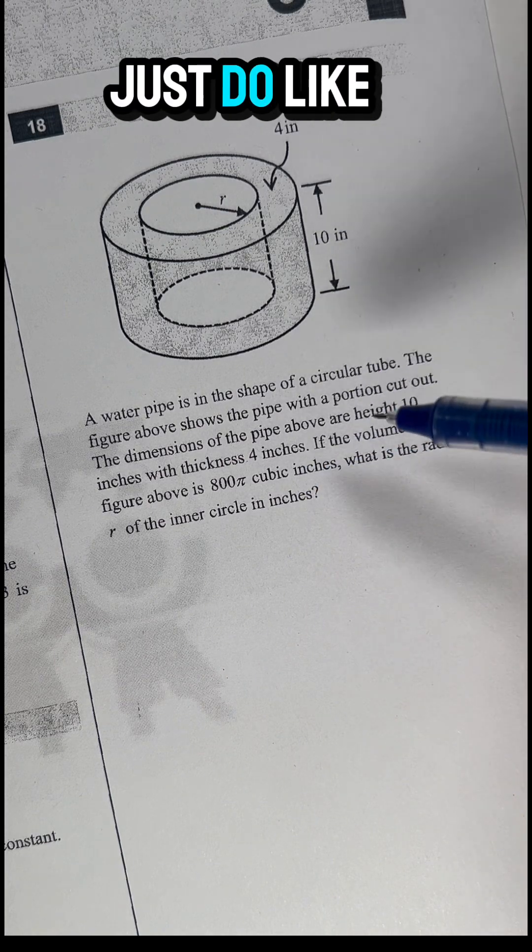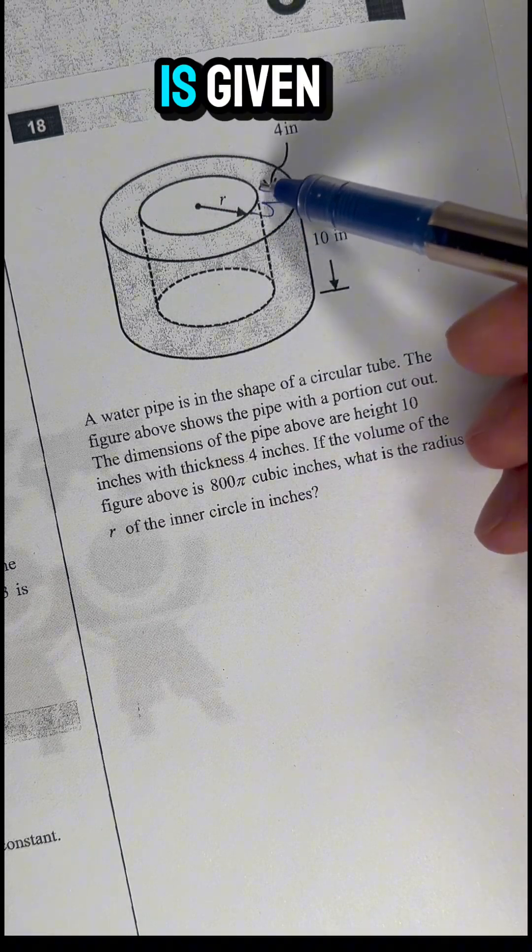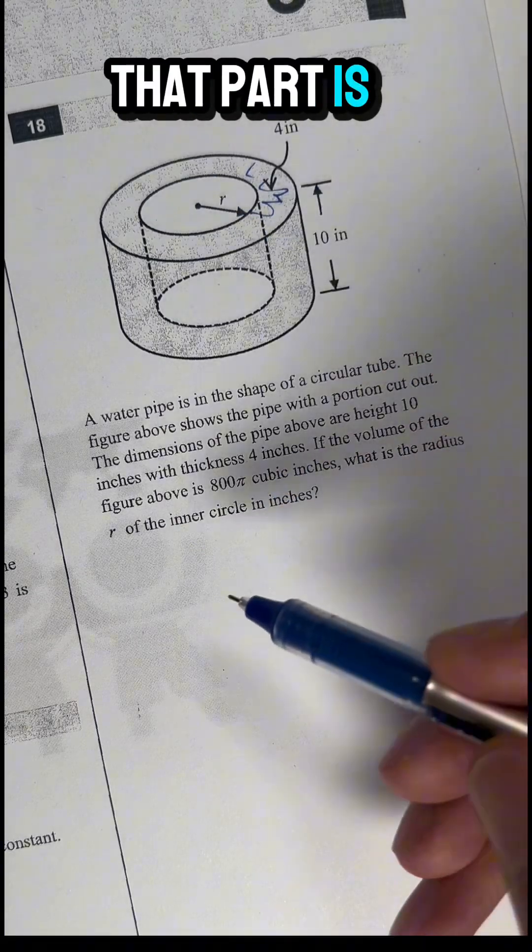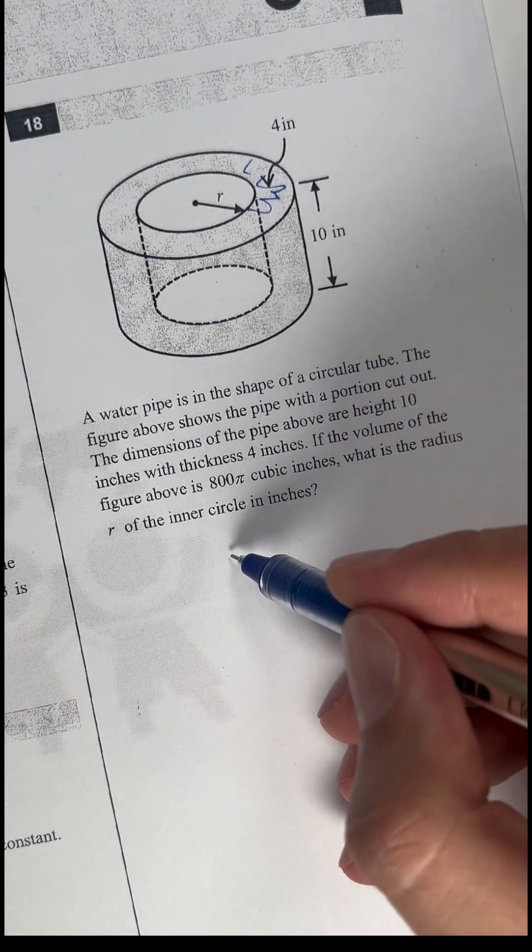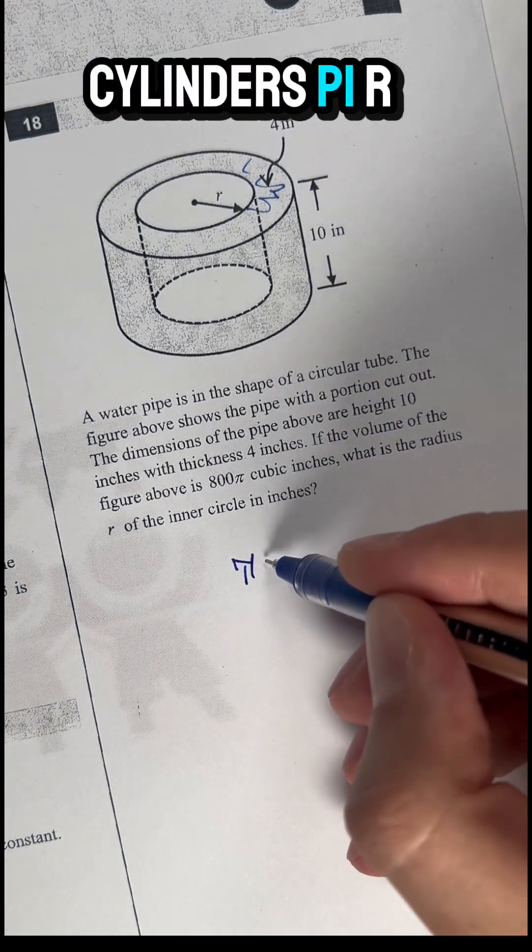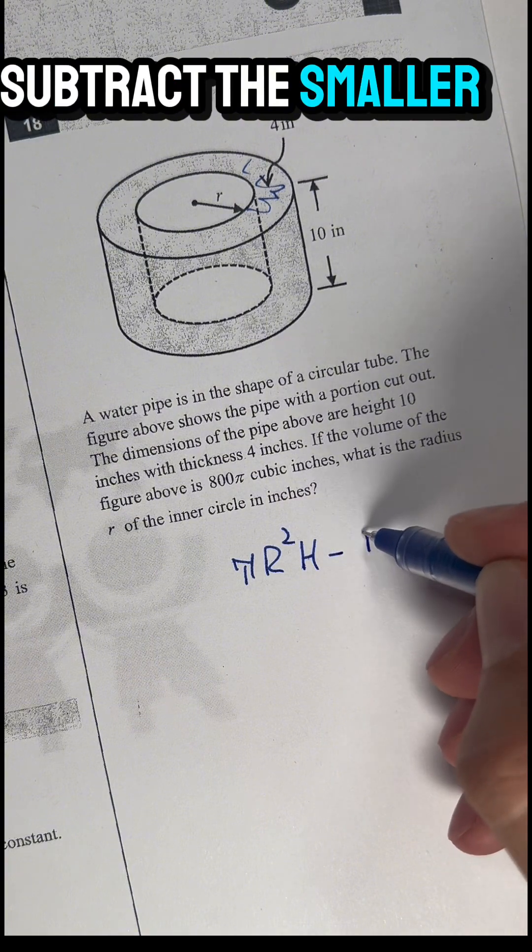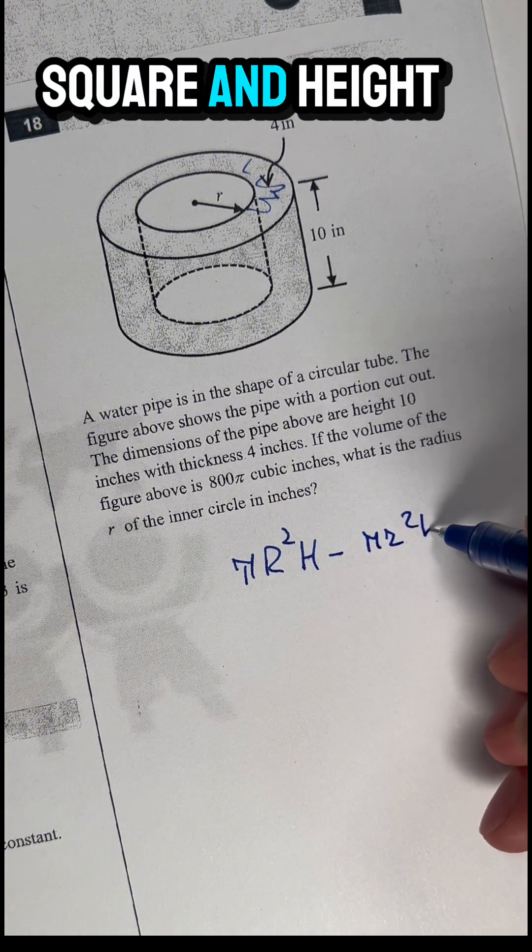Can we solve this if the volume of this part is given as 800π? The volume of that part is the volume of the greater cylinder, πR²h, and we subtract the smaller one, πr²h.